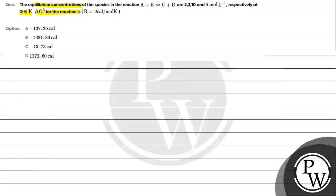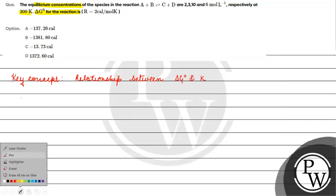The key concept for this question is the relationship between delta G naught and the equilibrium constant K. Delta G naught equals minus 2.303 RT log base 10 K.